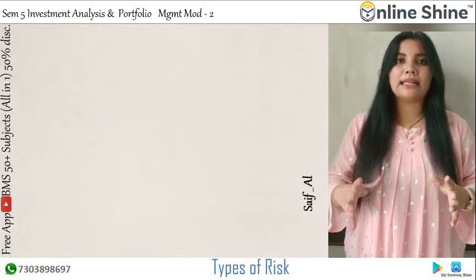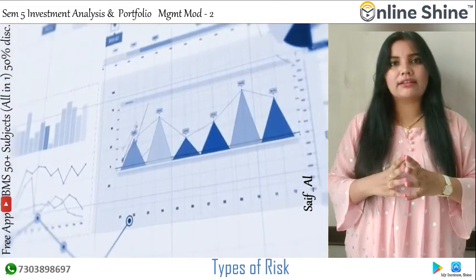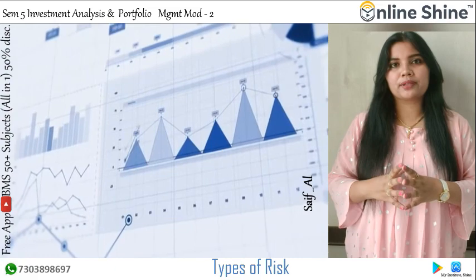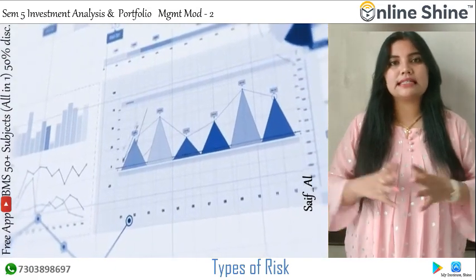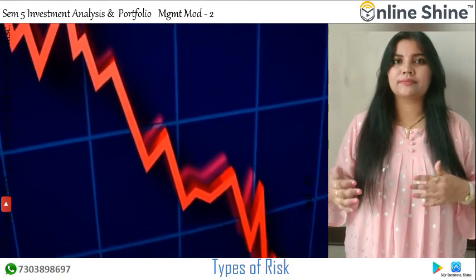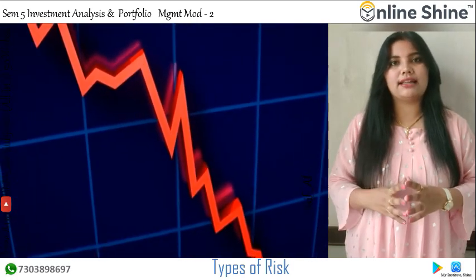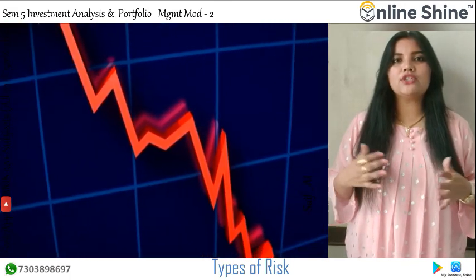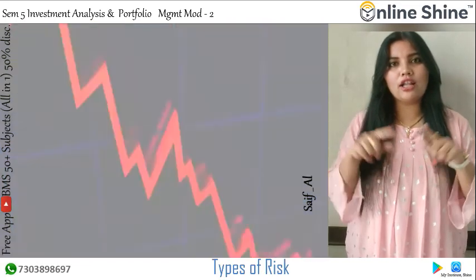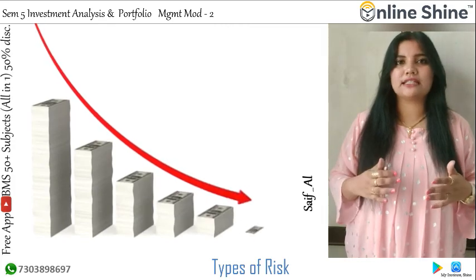Systematic risk is the market uncertainty of an investment, meaning it represents external factors that impact all or many companies in an industry or group. Unsystematic risk represents the asset-specific uncertainties that can affect the performance of an individual investment.